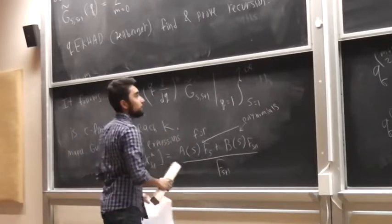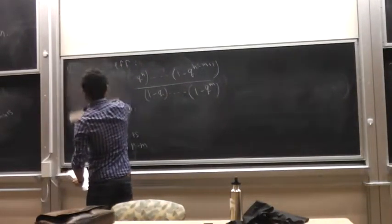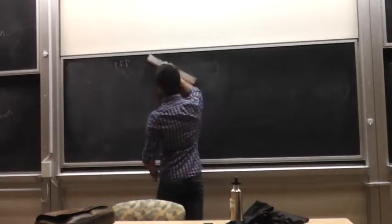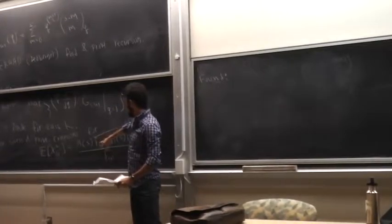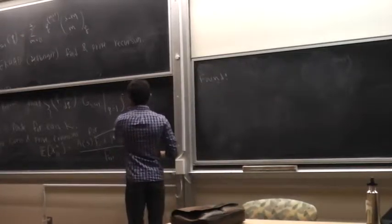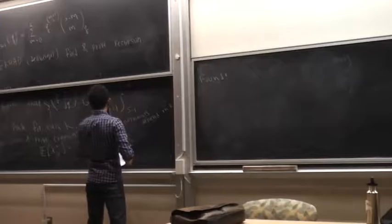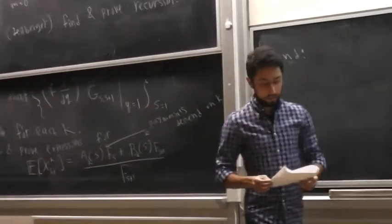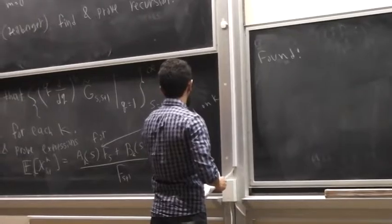And then so finally going back to asymptotics. So once we get the explicit expressions, we can easily take the limits because we have polynomials, and we know the Fibonacci part, the ratio will just go to the golden ratio. So we have rigorous proof for up to k equals 16.